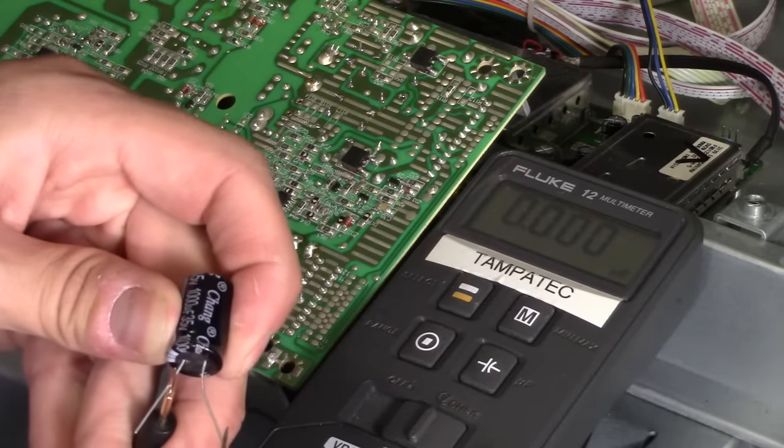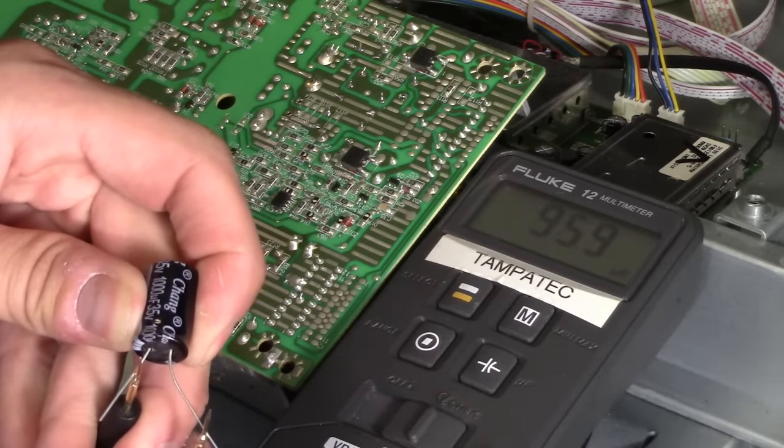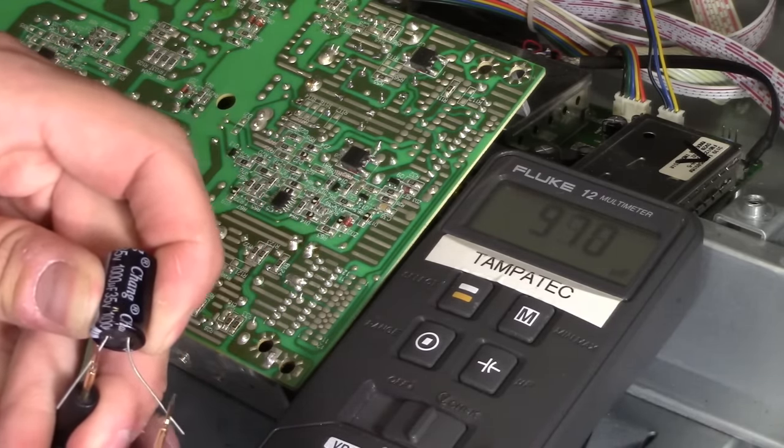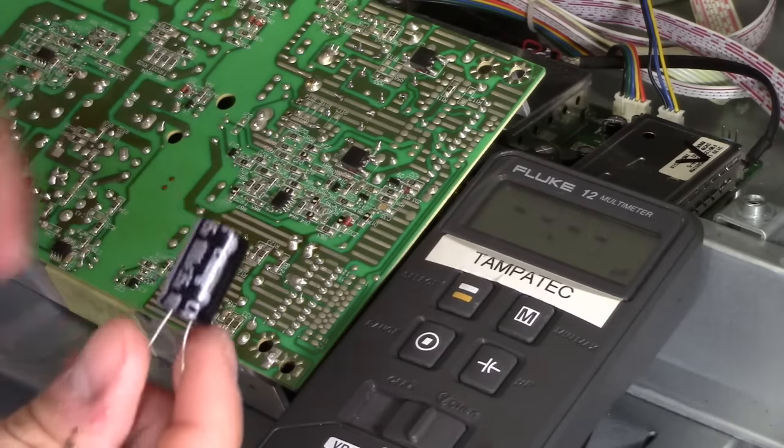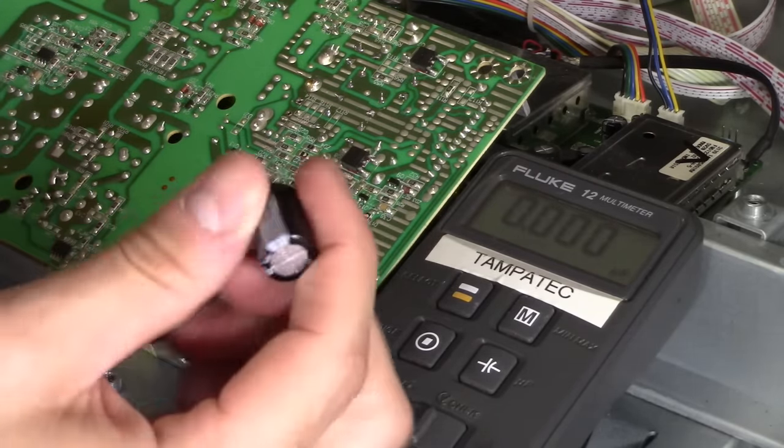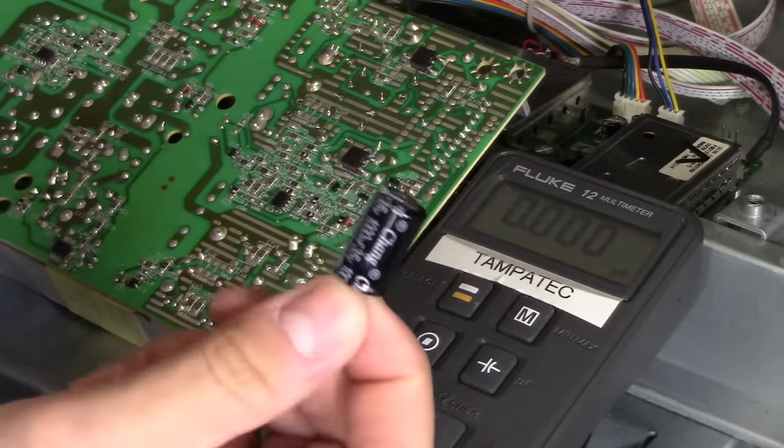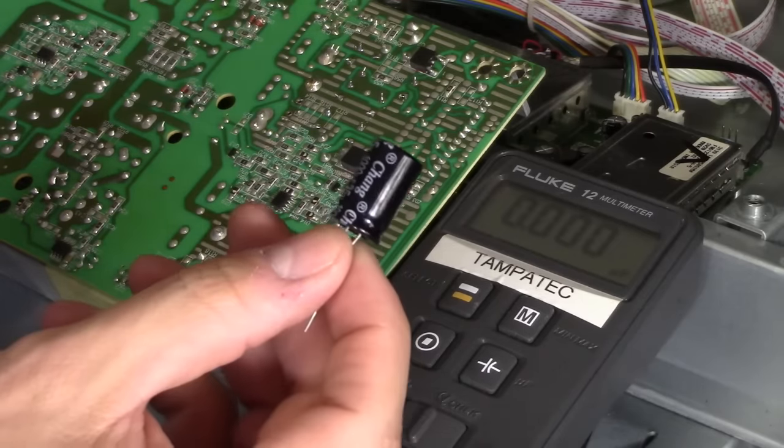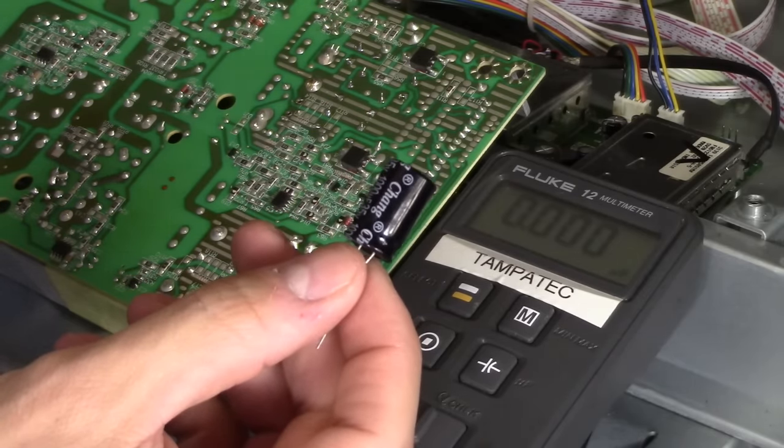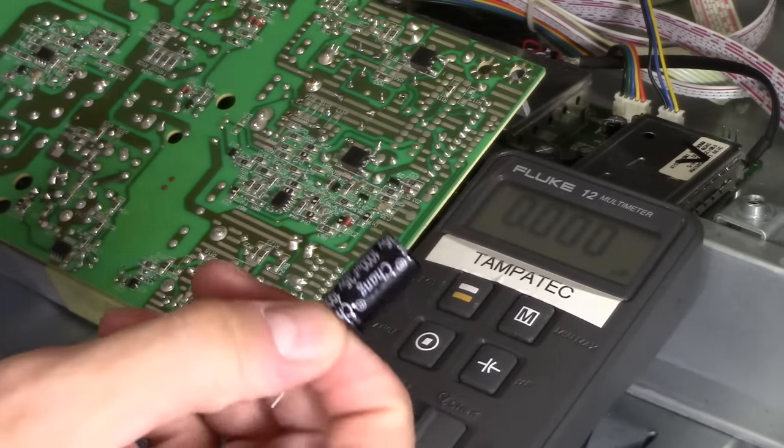And this new one reads 960 microfarads, 970. So that is definitely good. So if it was reading under 10% of its value, so if it was reading, I would say 900, then it's bad.